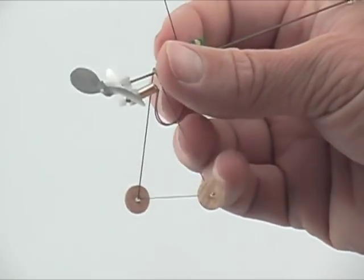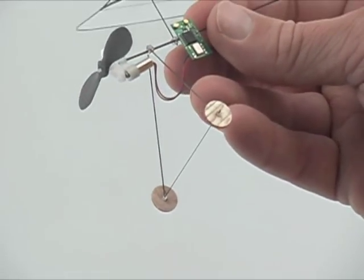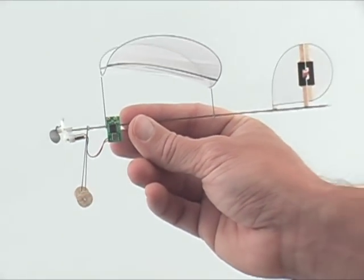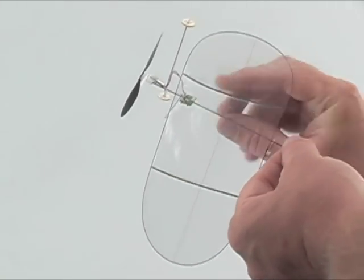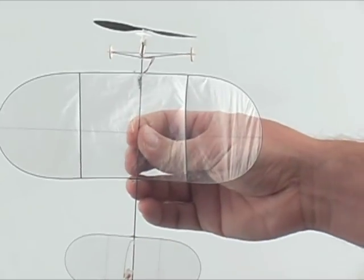After we make the thrust line adjustment, we would do a test fly and see if it needs to have a little more tweaking. Here we can see we have about two or three degrees right thrust, which is about right.